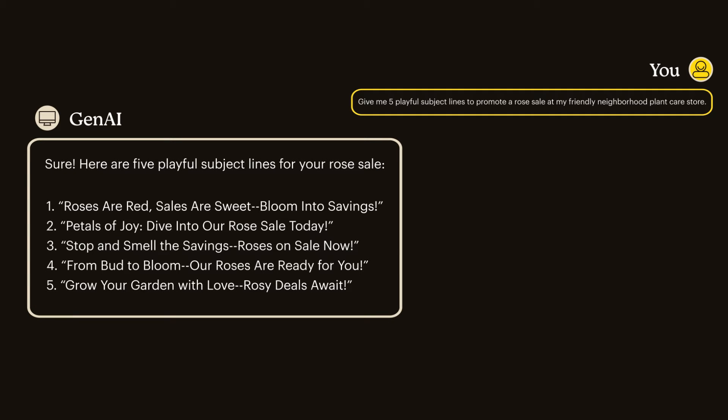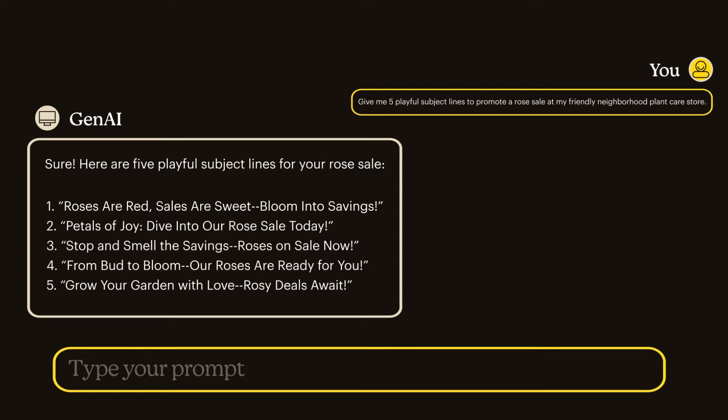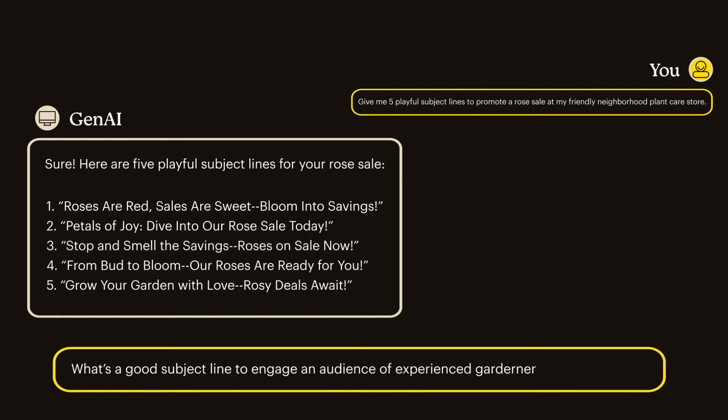After you review that first output, you can get more specific with your prompts to get even closer to what you're looking for. You can enter more details about the sale — like make the promotion 15% off — or ask questions like, what's a good subject line to engage an audience of experienced gardeners? This kind of works like a conversation. GenAI remembers the context of your previous prompt in the chat, so you don't have to repeat yourself or start from scratch. But it's a good idea to give it feedback, such as keep the part that says this, but change the part that says that. The main thing is just to be as clear as you can about your objective, so you get better results.